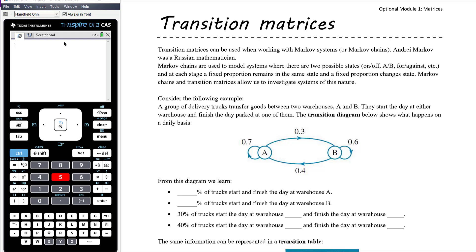Let's consider the following example: we have a group of delivery trucks that transfer goods between two warehouses A and B. They start the day at either warehouse and finish the day parked at one of those warehouses. The two states are warehouse A and warehouse B — some trucks start at A and finish at A, others start at A and end up at B, and the same is true for trucks that start at warehouse B.